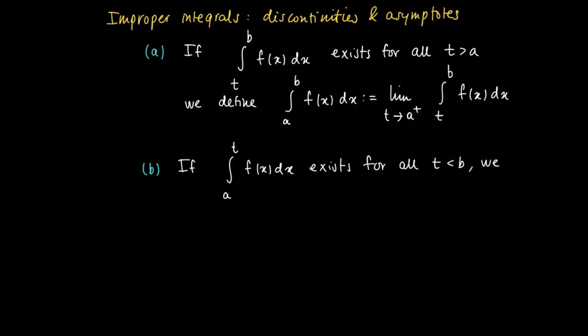So suppose that the integral from a to t f(x)dx exists for all t smaller than b. Then we define the integral from a to b f(x)dx as the limit for t to b minus of the integral a to t f(x)dx.